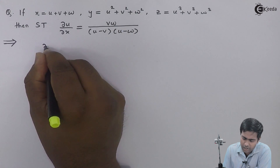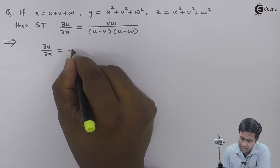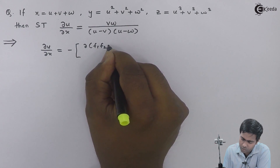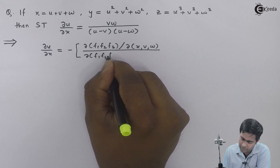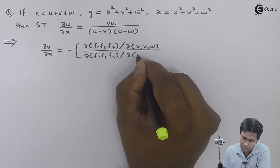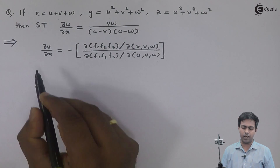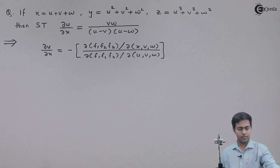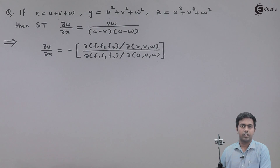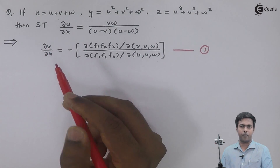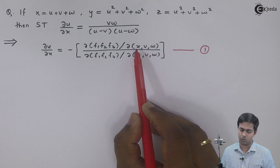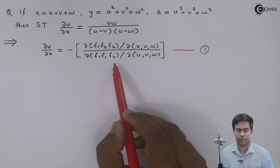To find ∂u/∂x using Jacobians, the formula is: minus of J(f1, f2, f3) with respect to (x, v, w) divided by J(f1, f2, f3) with respect to (u, v, w). We will use this formula, and I'll label it equation number 1. So I first need to find the Jacobian of f1, f2, f3 with respect to (x, v, w) and then with respect to (u, v, w).